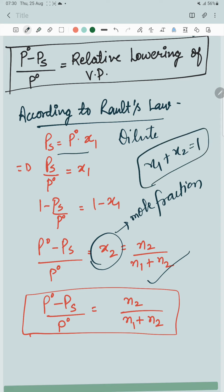X2 is the mole fraction and we know X1 plus X2 is equal to 1. So by putting these values, you get the relation for relative lowering of vapor pressure, where N1 and N2 are the number of moles. Thank you and have a nice day.